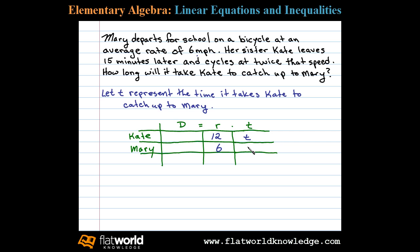That means Mary would have been cycling 15 minutes more than Kate when Kate catches up. So it's tempting to put T plus 15 minutes — but the rate was given as miles per hour, so our time must be in hours. We convert 15 minutes to hours: 15 minutes is one quarter of an hour. So for Mary's time we put T plus one quarter of an hour.